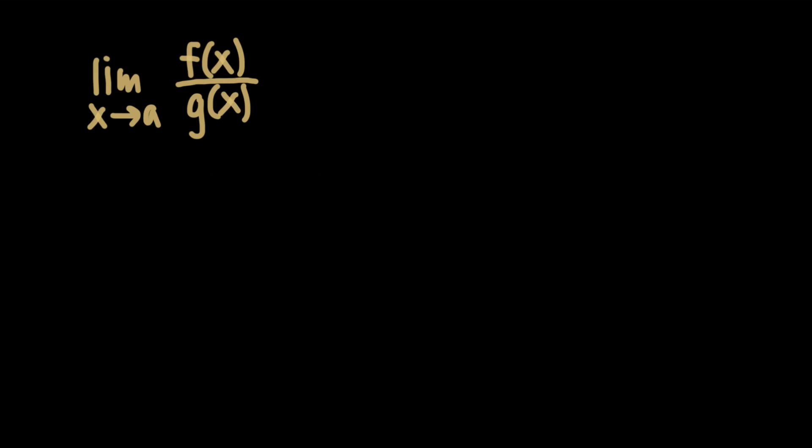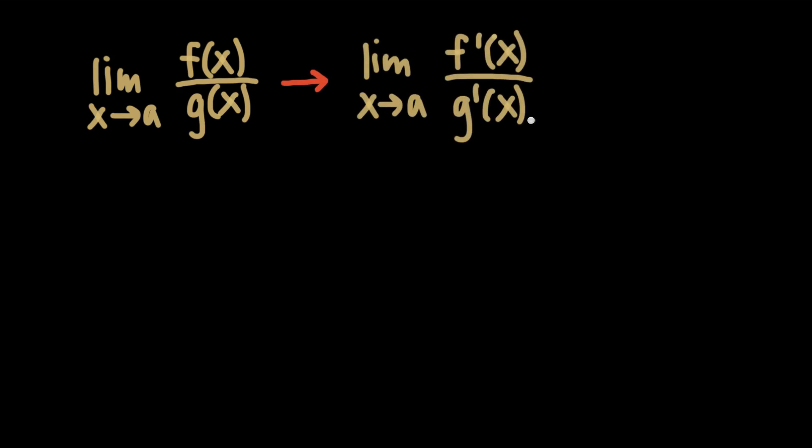Now that we've seen what L'Hôpital's rule does, we need to point out some things to be careful about. In order for L'Hôpital's rule to work, we need a couple of things to be true. L'Hôpital's rule replaces the original numerator with its derivative and the original denominator with its derivative, giving us f′(x) over g′(x). For this to work, g′(a) can't be zero — because when we evaluate at x equals a, if g′(a) is zero then our denominator is zero and the function is undefined. So if we apply L'Hôpital's rule and our denominator is still zero, L'Hôpital's rule isn't going to work in that case.